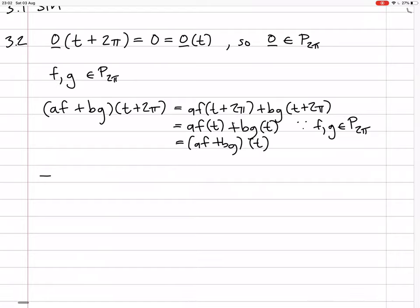So, in other words, that implies f and g in P2π implies af plus bg of t in P2π, and this thing below it is the explanation of why that is. So, all of this shows that P2π is a subspace.